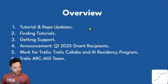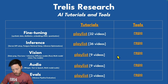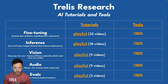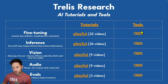Starting off with tutorial and repo updates: Trellis revolves around five categories of tutorials — fine tuning, inference, vision, audio, and evals. Each of these categories has its own playlist as well as a repository which you can purchase access to.